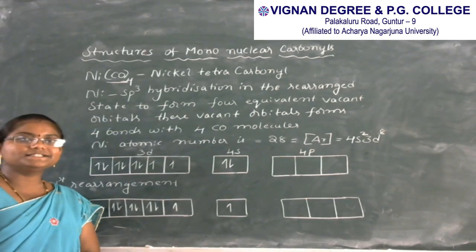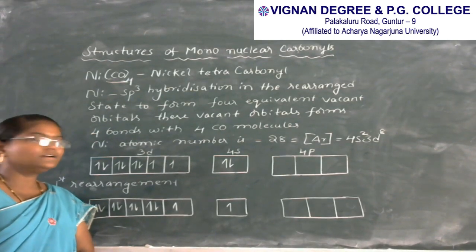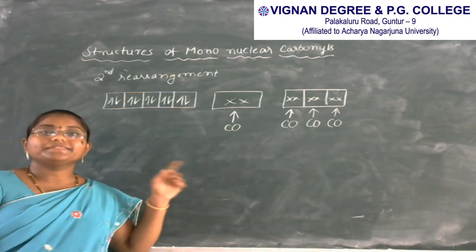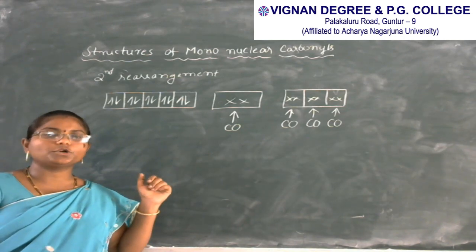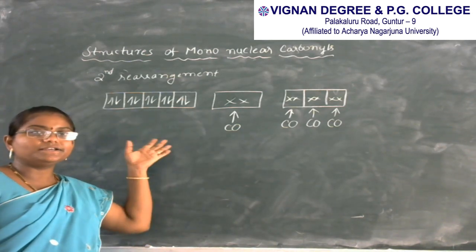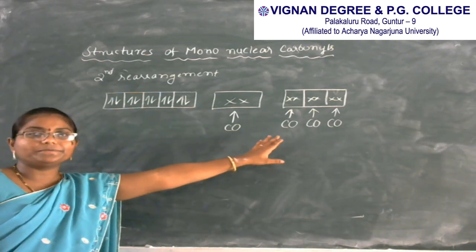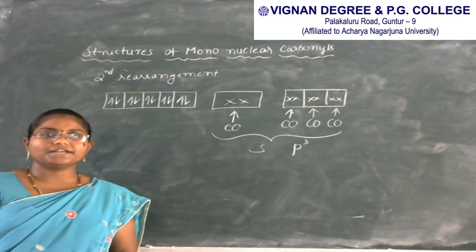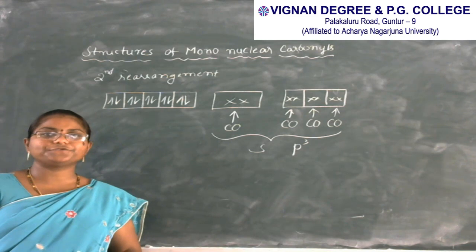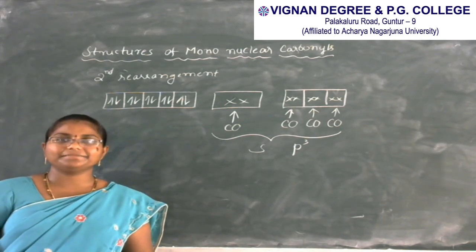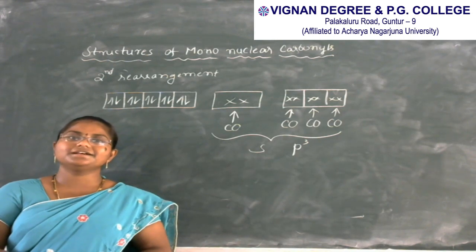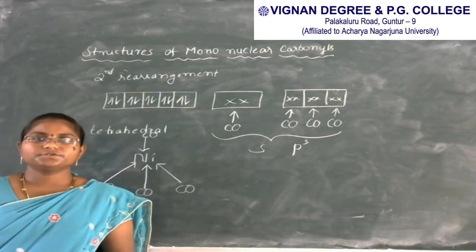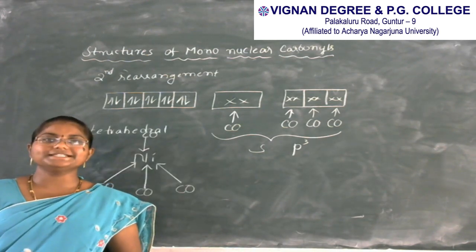In the second rearrangement, the remaining electron in 4S is also excited to its 3D orbital. In the second rearrangement, nickel forms 4 equivalent vacant orbitals undergoing SP3 hybridization. These 4 vacant orbitals form 4 CO bonds. According to this hybridization, the structure of nickel tetracarbonyl is tetrahedral.